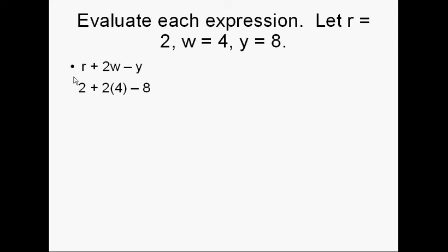What does order of operations tell us to do first? Order of operations tells us to do the multiplication first, so I do the 2 times 4. That gives me 2 plus 8 minus 8. Continuing to follow the rules of our order of operations, we do the addition and subtraction as we go across the problem. So 2 plus 8 is 10, 10 minus 8 is 2. Questions? If so, just rewind it.